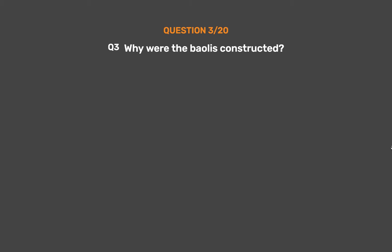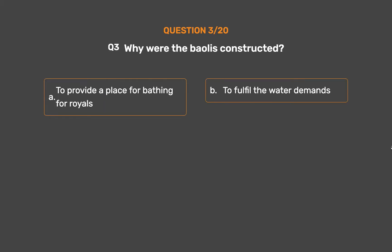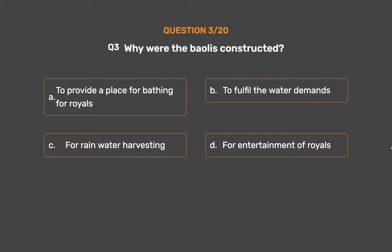Question No. 3: Why were the Bawalese constructed? Option A: To provide a place for bathing for royals. Option B: To fulfill the water demands. Option C: For rainwater harvesting. Option D: For entertainment of royals.